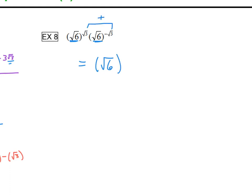Okay, we add those exponents. So we have square root of 3 plus a negative square root of 3. Well square root of 3 plus a negative square root of 3 cancels out, but technically it equals 0, so we have the square root of 6 raised to the 0 power.